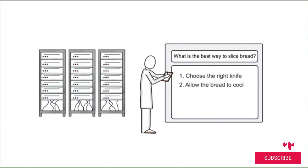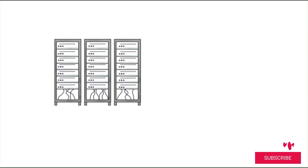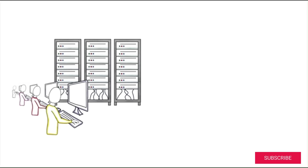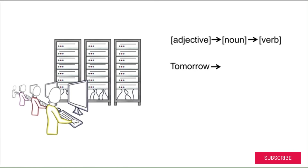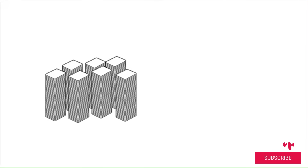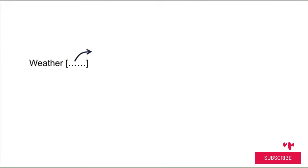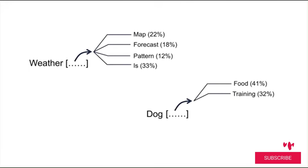What sounds like expertise is really a math problem for artificial intelligence. It works because powerful computers are trained to look for common patterns between words and phrases, like 'tomorrow morning' or 'cup of coffee.' Large language models can also detect context — they can tell, based on words that appear together, if you mean 'bat' the animal or 'bat' the sports equipment.